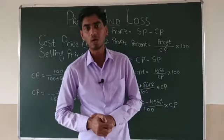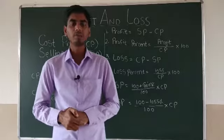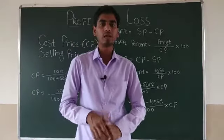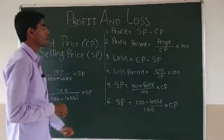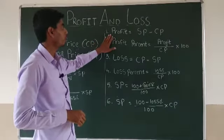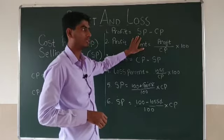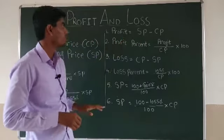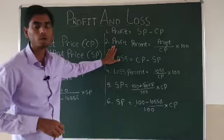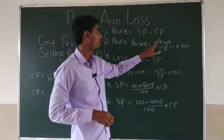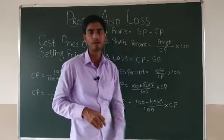To find profit, loss, profit percent, loss percent, selling price, or cost price, there are some formulas. To find profit, subtract cost price from selling price. For profit percent, write profit over cost price and multiply by 100.